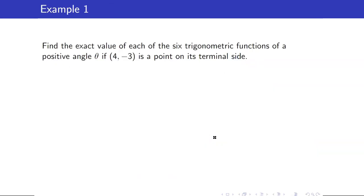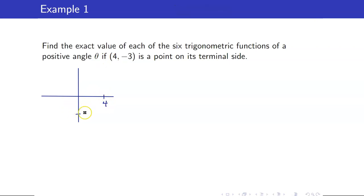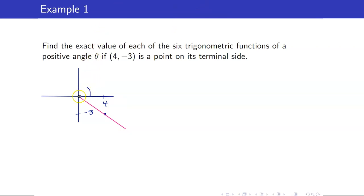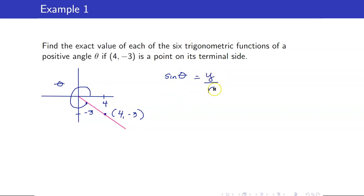For example, find the exact value of each trigonometric function of a positive angle theta if (4, -3) is a point on its terminal side. The point (4, -3) is in quadrant 4, so that is the terminal side. Since theta is a positive angle, the initial side starts from the positive x-axis, giving us our angle theta.